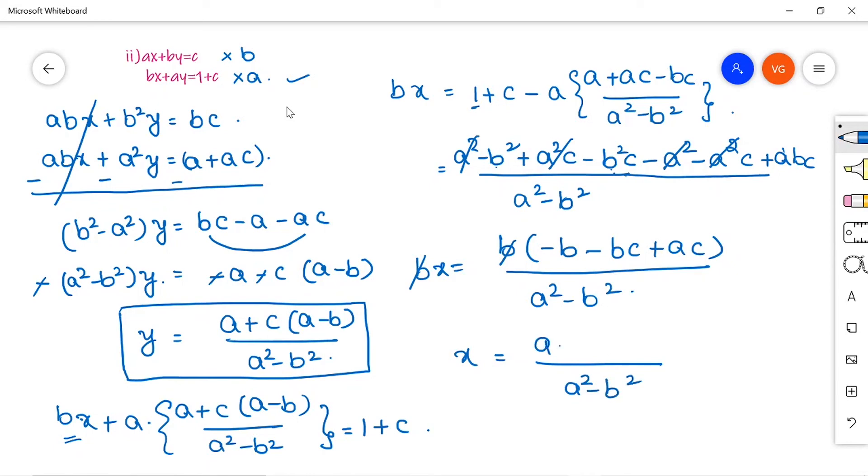So AC minus BC, you can take C common such that you will get A minus B here. Then you will be left with minus B. So this is your C into A minus B minus B divided by A square minus B square. So this is how we can simplify this one. I just took here the C as the common part. From these two terms C is common, so I have just taken C as common. So I have left with A minus B and the remaining term minus B I am writing as it is. So denominator also I am writing as it is, A square minus B square. So this way we can simplify this problem.